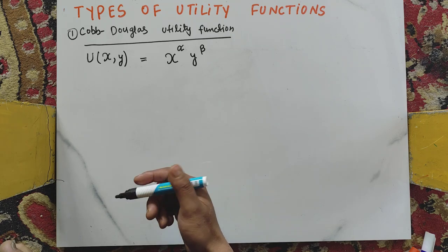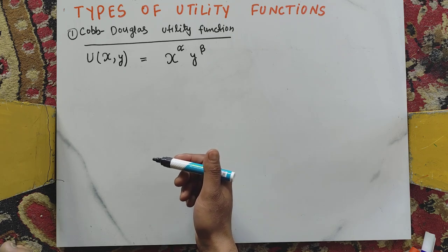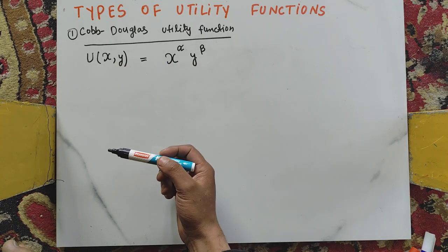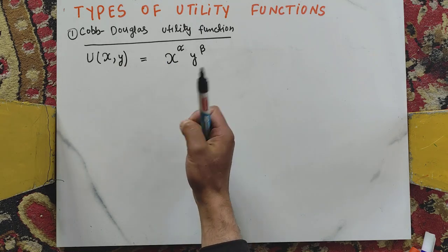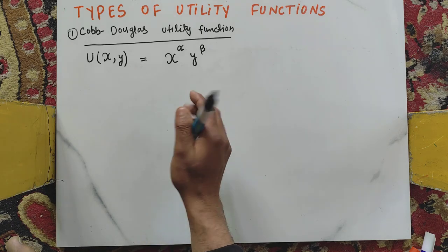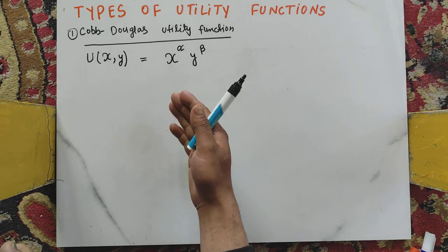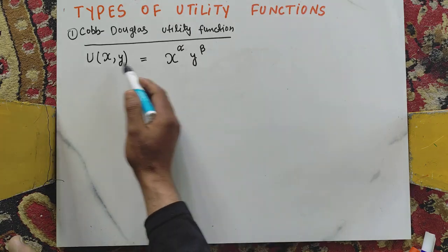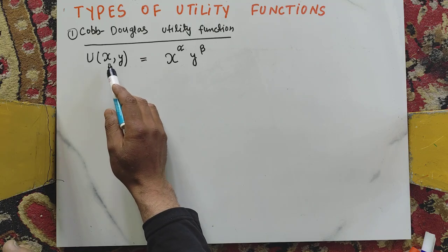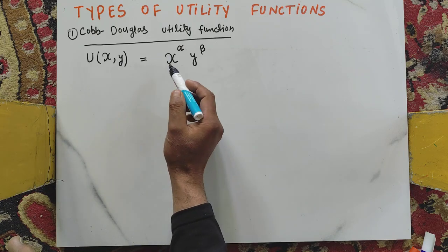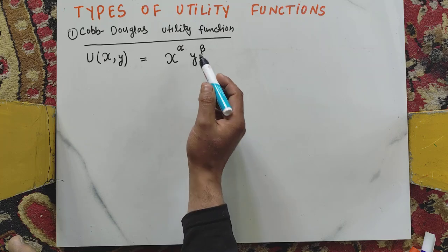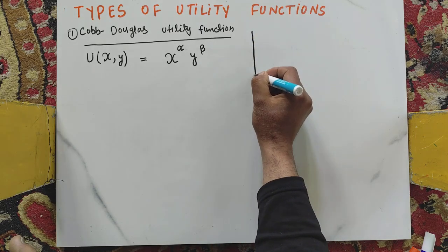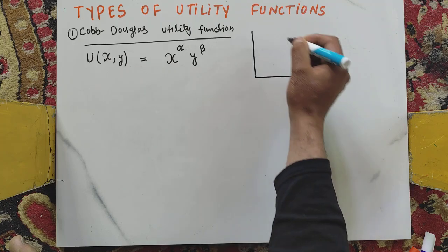In this video we will learn about the different types of utility functions in economics. The first one is the Cobb-Douglas utility function. This function describes goods that are neither perfect substitutes nor perfect complements, allowing for a combination of goods to yield the same utility. Its functional form is: utility is a function of two goods X and Y, expressed as X to the power alpha times Y to the power beta.